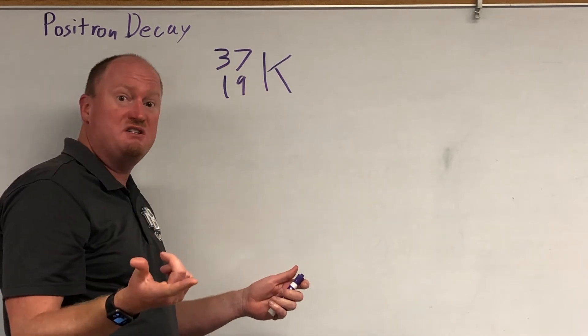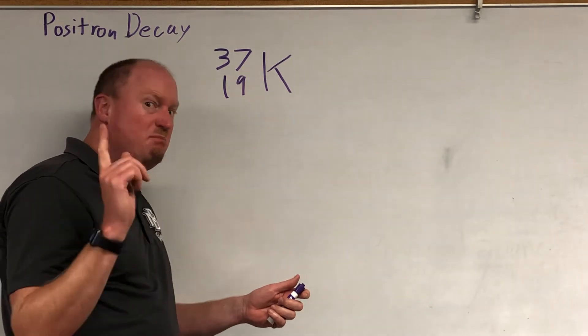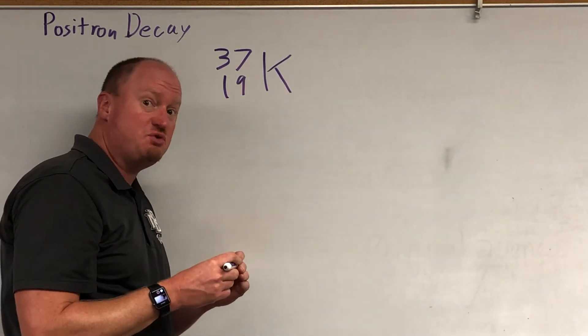There's actually a couple different ways that unstable potassium atoms can decay, but we're going to focus on one here, and that is positron decay.